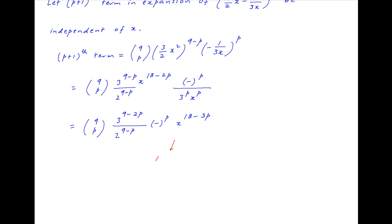Now, if this term is to be independent of x, then the power of x — which is (18 − 3p) — must be equal to 0. Therefore p is equal to 6.